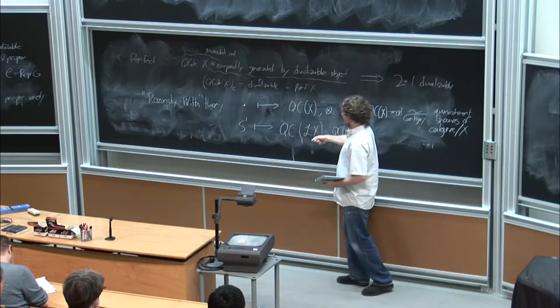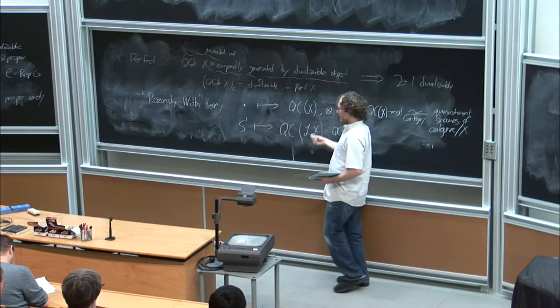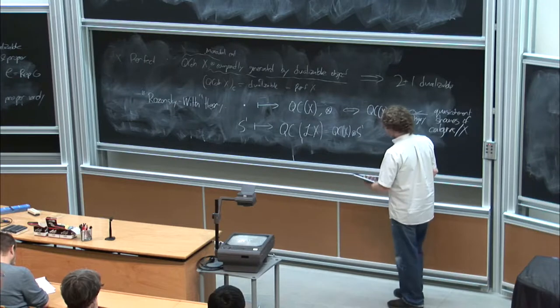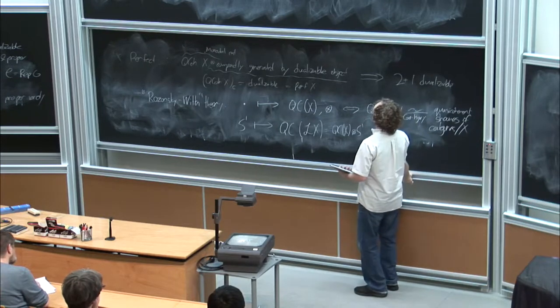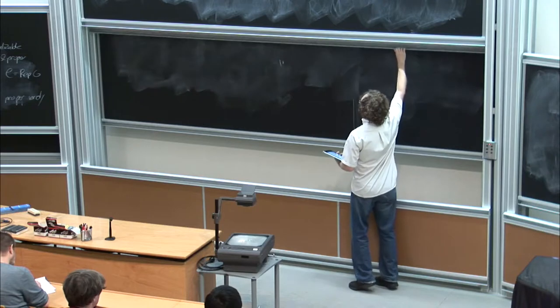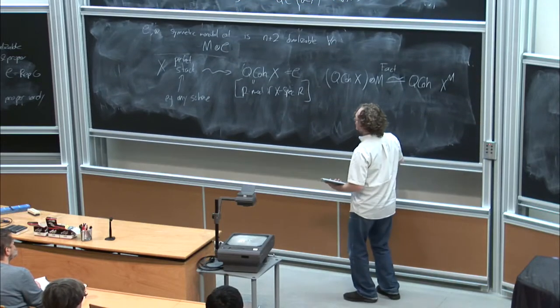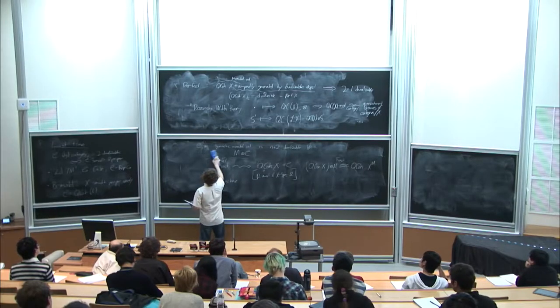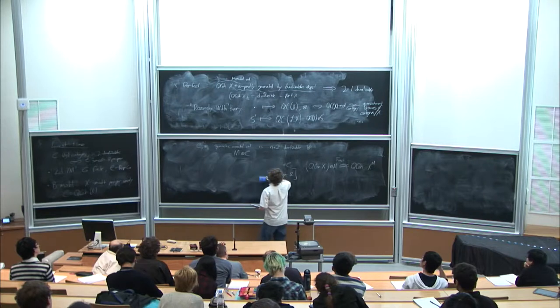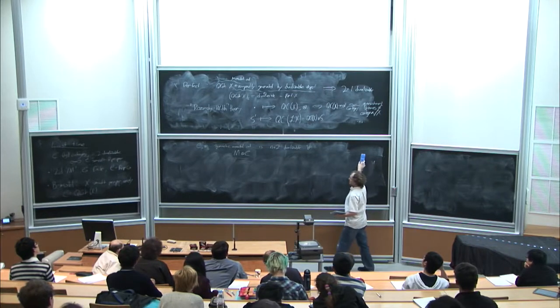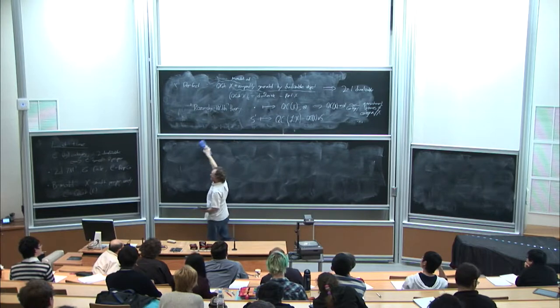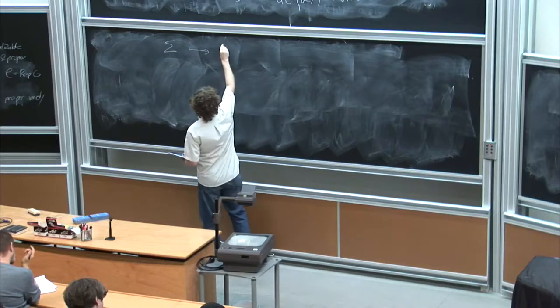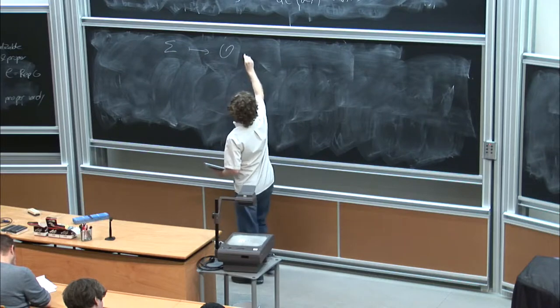To a circle, we're attaching a category which is sheaves on the loop space. That's the Hochschild homology of quasi-coherent sheaves on X. Now thinking of this not as a monoidal category anymore, just as a plain category. And now the feature we have is that this is two-dualizable, and I actually get to attach vector spaces to two-manifolds. That's the part that wasn't completely tautological from this tensor product assertion.